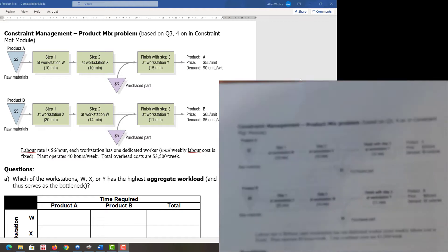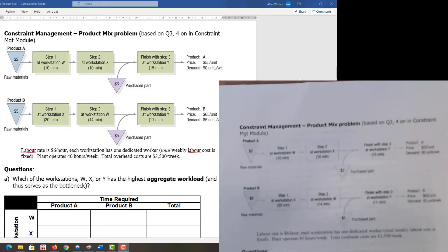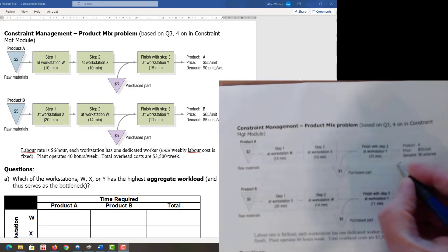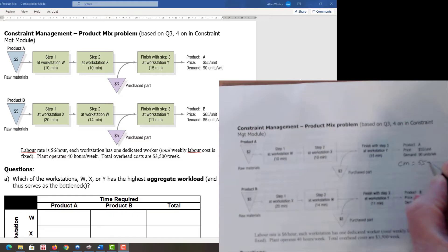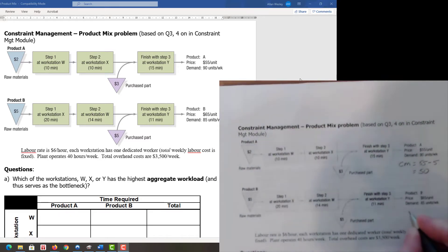Our goal is to maximize contribution margin subject to restrictions on resources. Contribution margin for product A equals the 55 dollar price minus direct material costs, which is 55 minus 5 dollars for parts, giving us 50 dollars in contribution margin for A.